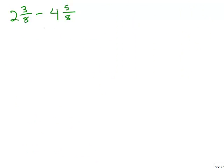In this example, we are subtracting two numbers, but we're subtracting a larger number from a smaller number. So we want to rewrite this subtraction as adding the opposite. So we begin with 2 and 3 eighths plus a negative 4 and 5 eighths.